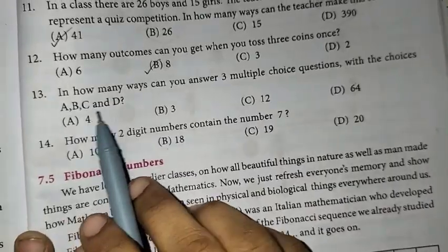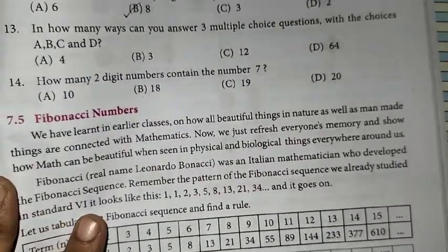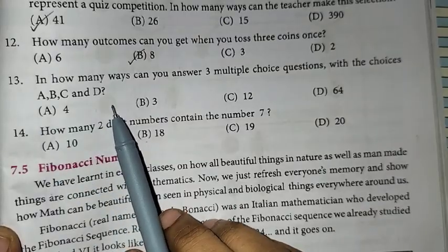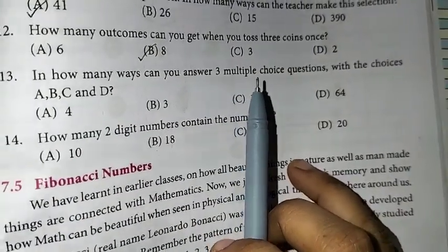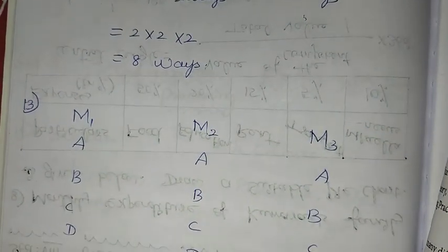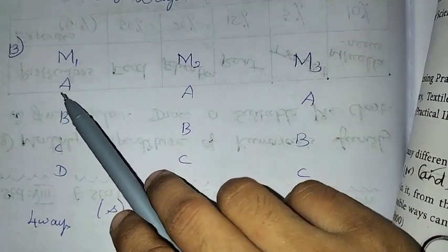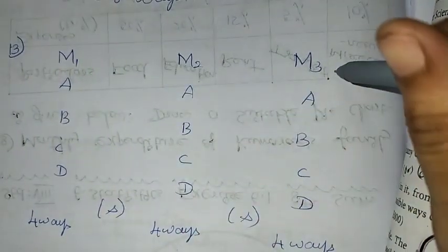Next sum: in how many ways can you answer 3 multiple choice questions with the choices A, B, C, D? So there are 3 multiple choice questions — multiple choice 1, multiple choice 2, multiple choice 3 — each with options A, B, C, D.